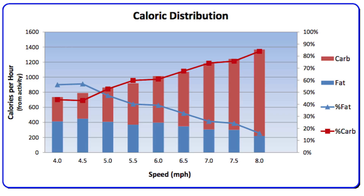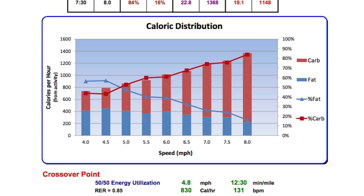Blue represents fat, red represents carbohydrate, and the lines show percentage as a different way to present it. One of the first things we look for is what's called the metabolic efficiency or crossover point — where you're at 50% carbohydrate and 50% fat as your fuel source. That's the crossover point right there.